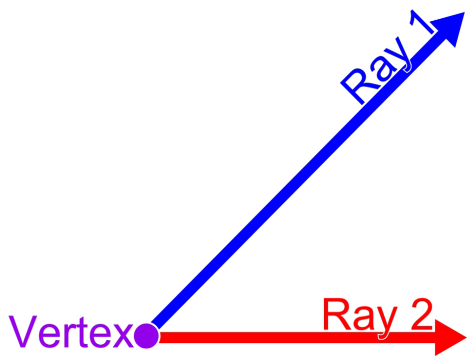Angle is also used to designate the measure of an angle or of a rotation. This measure is the ratio of the length of a circular arc to its radius. In the case of a geometric angle, the arc is centered at the vertex and delimited by the sides. In the case of a rotation, the arc is centered at the center of the rotation and delimited by any other point and its image by the rotation.